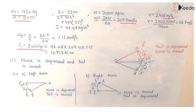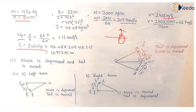What remains is to calculate the angular velocity of precession ω_p. Since the body is moving along a circle of radius r with linear velocity v, the angular velocity of precession is ω_p = v/r. We substitute all the values into the formula C = I·ω·ω_p and obtain the answer.